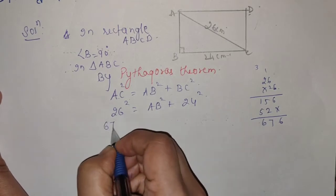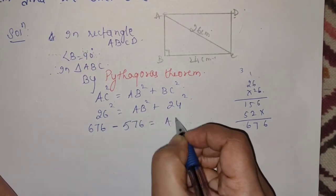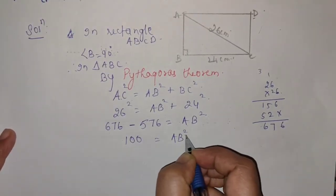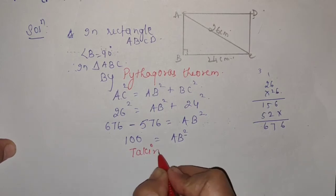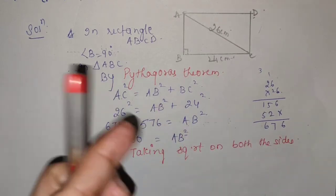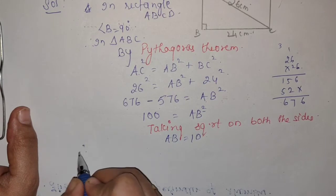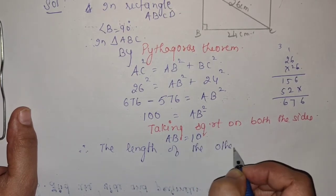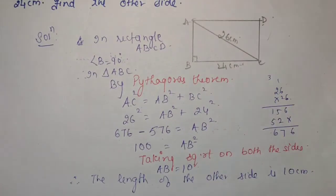Substitute the values: 26² = AB² + 24². 26 × 26 = 676. 24² = 576. So AB² = 676 - 576 = 100. Taking square root on both sides — AB = 10. Therefore, the length of the other side is 10 centimeter. This is the way you have to solve — very systematically.